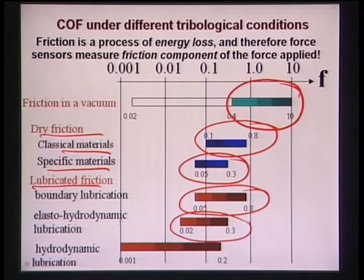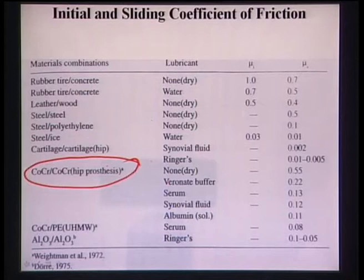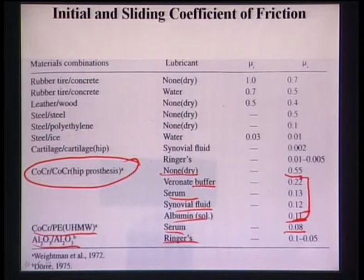Friction coefficient data for self-mated steel: in vacuum it can be very high, up to 10; dry friction for classical metals varies from 0.05 to 0.8; lubricated friction ranges between 0.0 and 0.3. For cobalt-chromium used in knee joint applications, dry coefficient of friction is around 0.55-0.6. With lubricants like serum, synovial fluid, or albumin solution, friction coefficient reduces to around 0.1. Cobalt-chromium versus polyethylene in serum solution gives 0.08; alumina versus alumina in Ringer's solution is around 0.05-0.1.